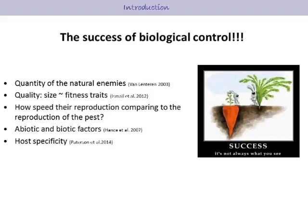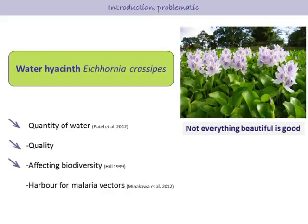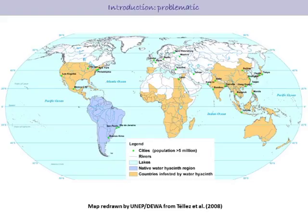Host specificity may be the most important factor in the case of aquatic weeds. The plant I am studying is water hyacinth. It's a beautiful plant and was introduced to all parts of the world as an ornamental plant. But as you know, not everything beautiful is always good. It can reduce water quantity and quality, and also affects biodiversity in water. Minakawa (2012) found that areas infested by water hyacinth also harbor malaria vectors. This map shows the distribution of water hyacinth from its origin in South America to all parts of the world.